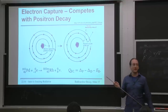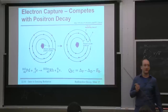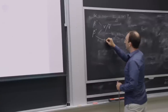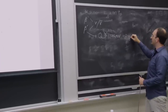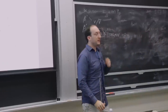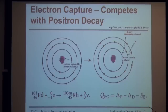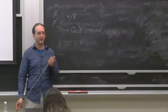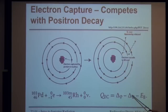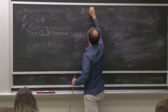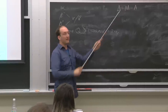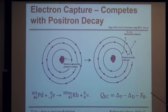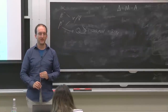For electron capture, you don't need much of an energy difference between the parent and the daughter, unlike positron decay, where for positron decay to happen you have to have Q at least equal to 1.022 MeV, which is the same as two times the rest mass of the electron. For electron capture, this can happen at just about any energy, as long as you can overcome just the binding energy of the electron, which is negligible compared to these nuclear energy levels. The excess mass is the real mass minus the terrible approximation of a nuclei's mass.